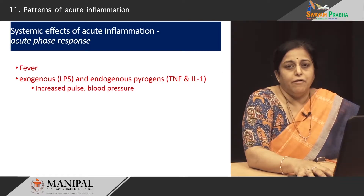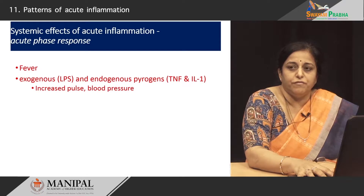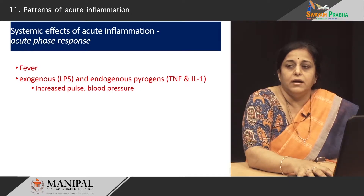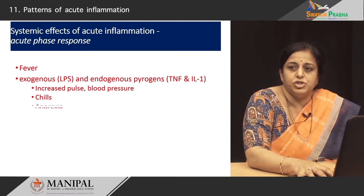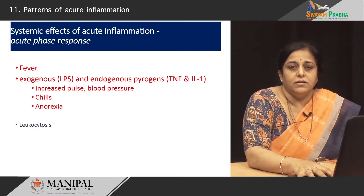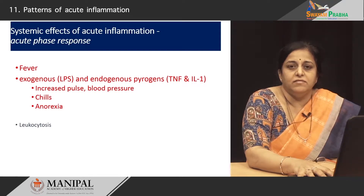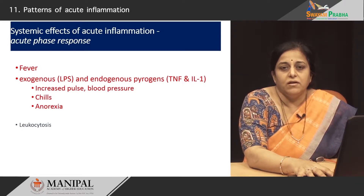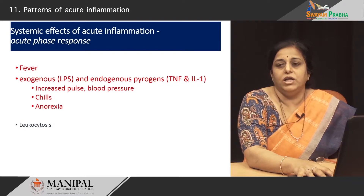We also know that when we have a systemic or severe infection, there is tachycardia and elevated blood pressure, and one may experience chills and anorexia. These are all effects of cytokines that result in these manifestations in inflammation. Another important acute phase reaction is leukocytosis — these cytokines act on the bone marrow, leading to increased synthesis of leukocytes as well as their release into the circulation and to the site of injury. This is a defense mechanism to increase leukocyte production and their accumulation at the site of injury.